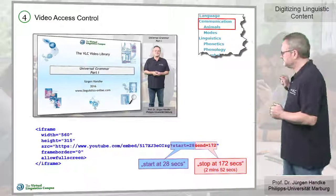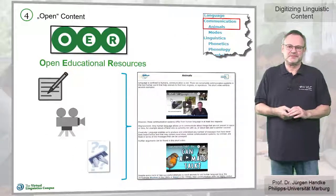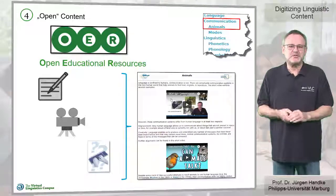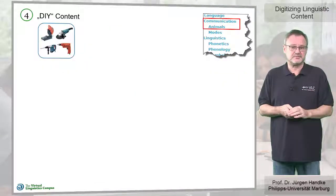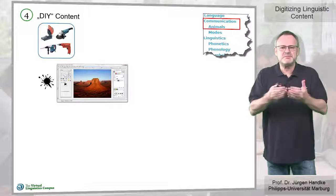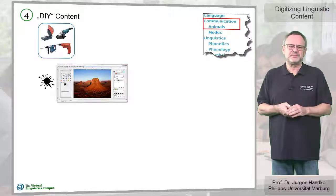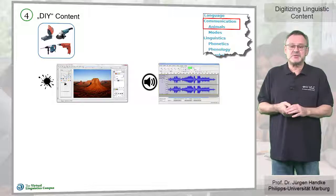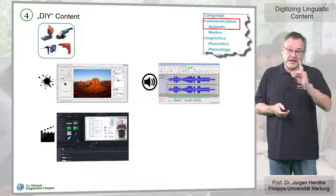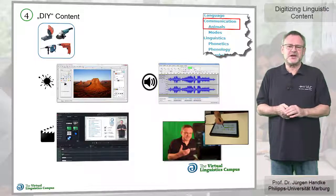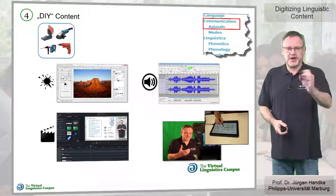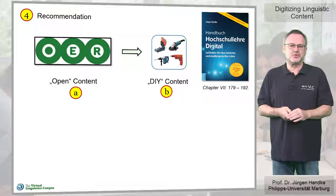So in summary, open content is available and we have a variety of options to access and control it. However, there may be cases where we have to produce the content ourselves. In such cases, we have to make sure that we can produce elements beyond plain text — for example images using imaging and photo editing software, audio files using audio editing programs, and even video with the help of video editing tools. We also need the necessary technical infrastructure and a considerable portion of media know-how. My recommendation is clear: try the open content search before you start on your own or use external help.